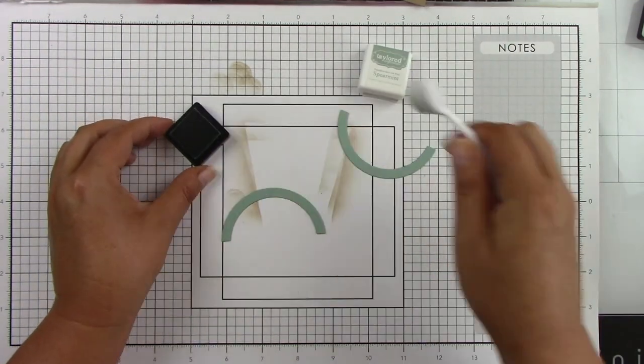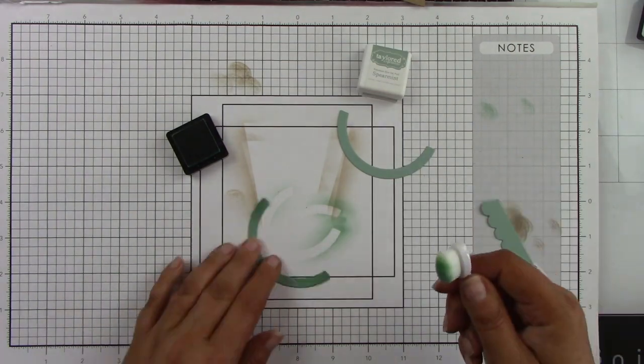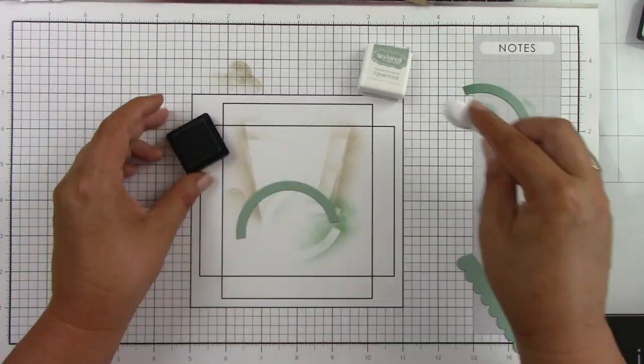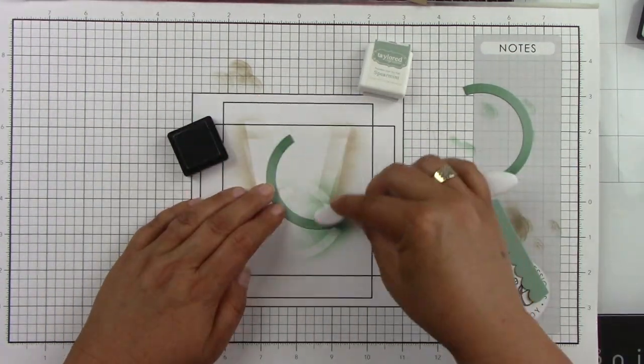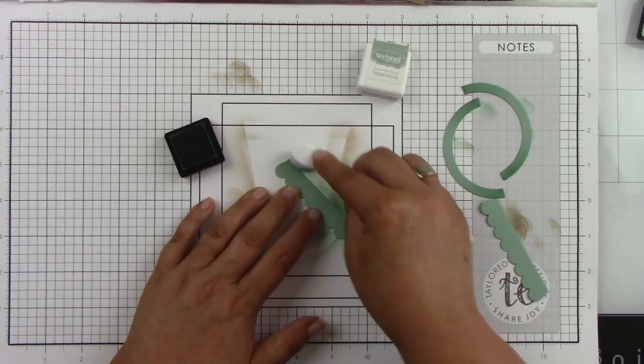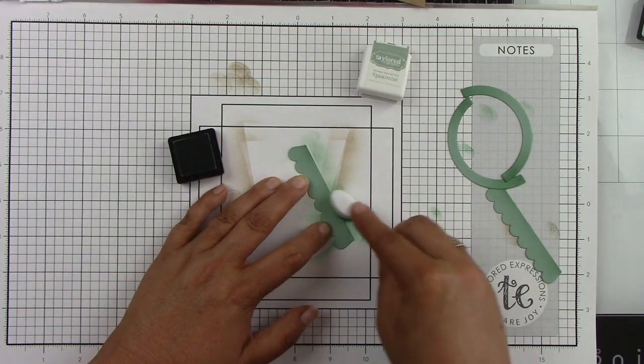I'm going to do the same thing with the spearmint cardstock and the spearmint ink on both of the handles and both of the little scalloped pieces. So the handles are kind of at the base is where I'm adding that little bit of detail. And as you can see, it just adds a little bit of shading. And then on the scalloped pieces, just at the top, adding a little bit of shading.